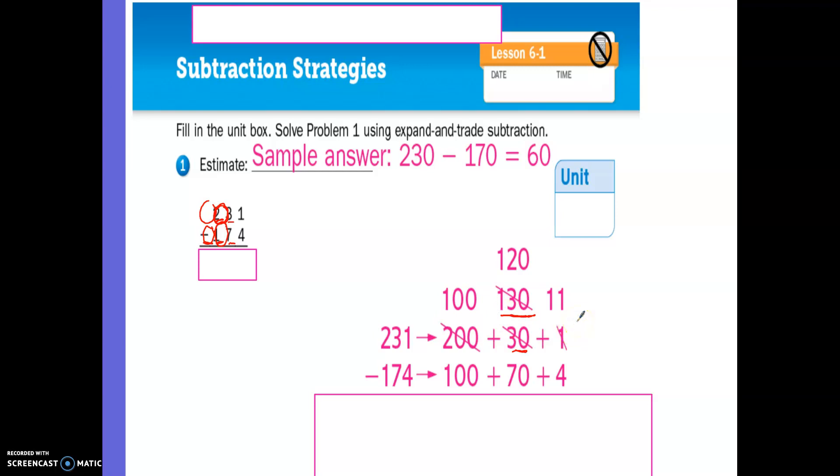What trade can we make? Well, we can break one of the hundreds into 10 tens and add them to the 30 to make 130. So I'm going to show that. So what I did here is I took 231, I wrote it out in my expanded form, 200 plus 30 plus 1. And I did the same thing for the 174, 100 plus 70 plus 4. And then when I'm looking at this, I can't take away 70 from 30 because 30 is less than 70. So what I did is I came over to my hundreds, and I took 100 away. So I crossed off the 200. I made it be 100. And then I had 30 over here. So I took that 100 and I added it to the 30. Now I have 130.